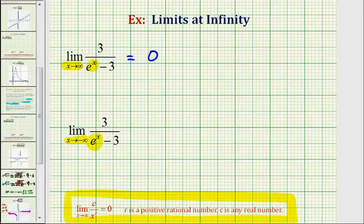It might be easier to see this if we write e to the power of x as one divided by e to the negative x. Remember, if we write this over one and then move this across the fraction bar it would change the sign of the exponent. So we can write this as a limit as x approaches negative infinity of three divided by one divided by e to the negative x minus three.